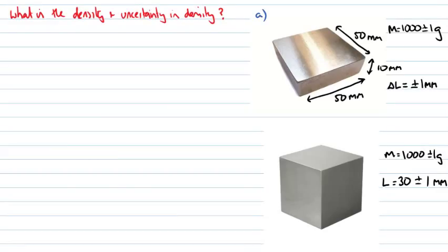This is a numerical error propagation example where we're asked to find the density and the uncertainty in the density of two objects. We're given the length of the three sides with some uncertainty to 1 millimeter and we're also given the mass to the uncertainty of 1 gram.